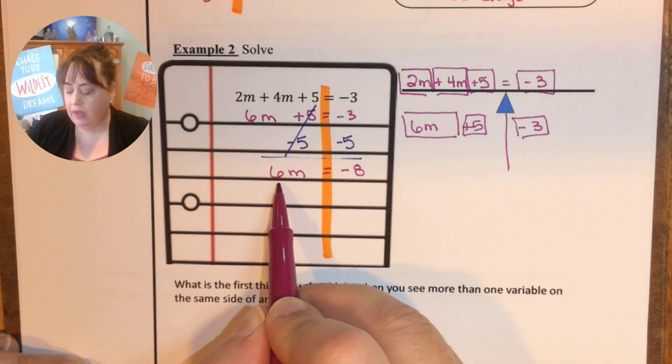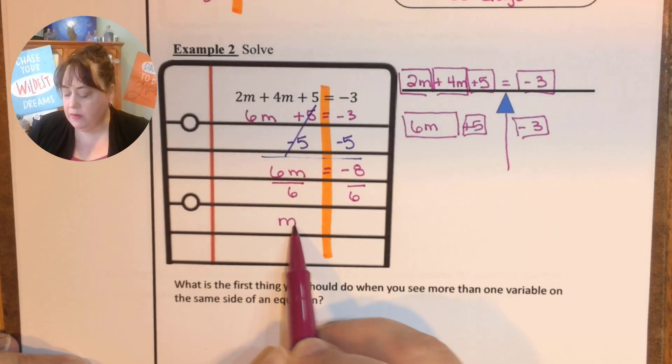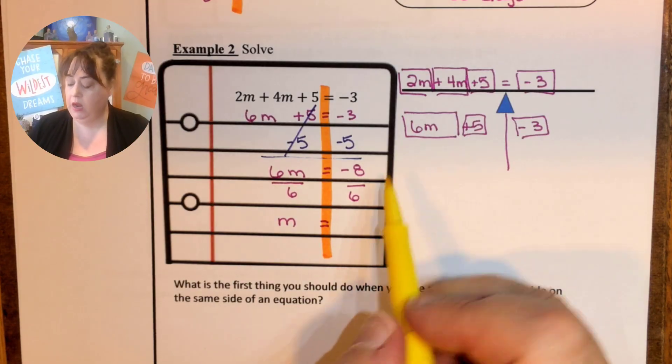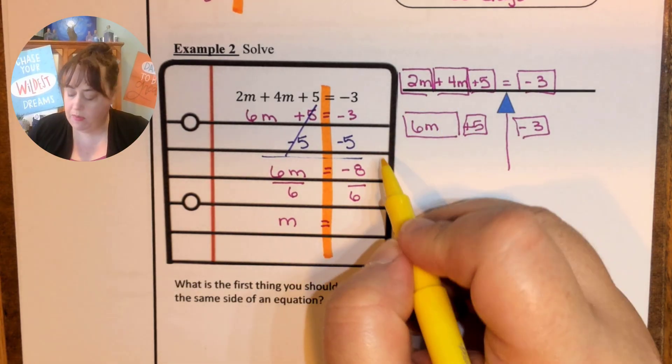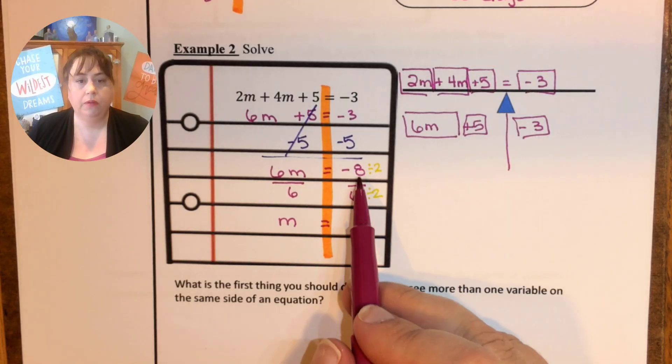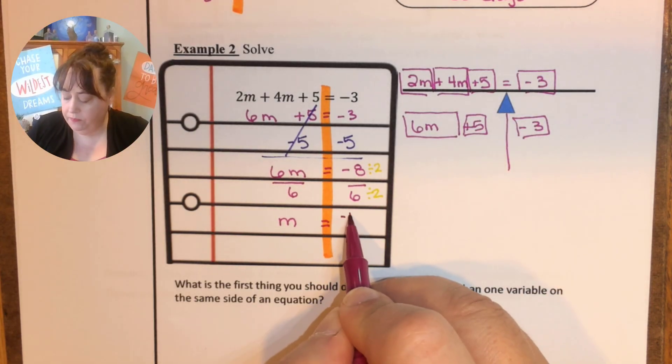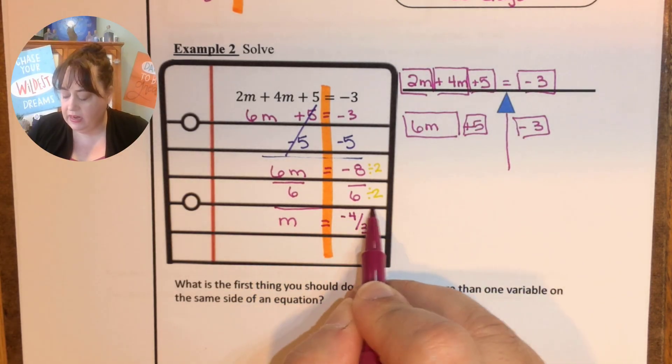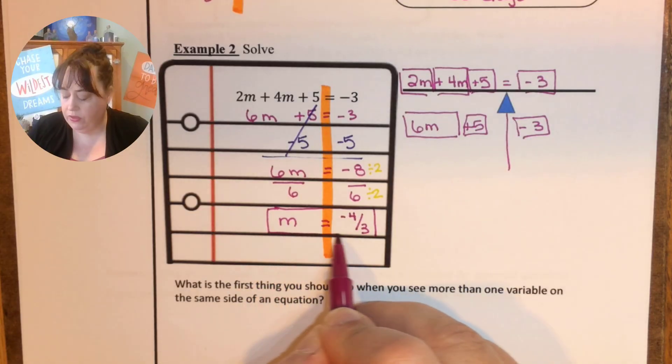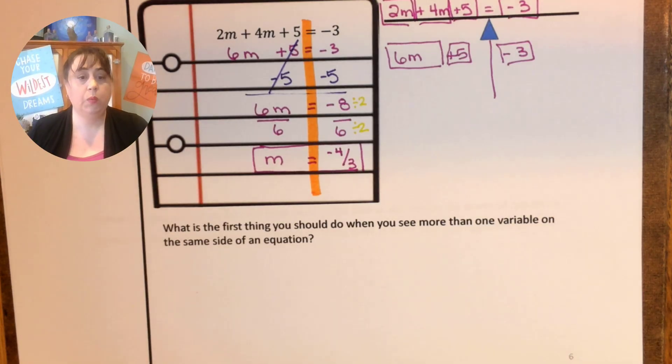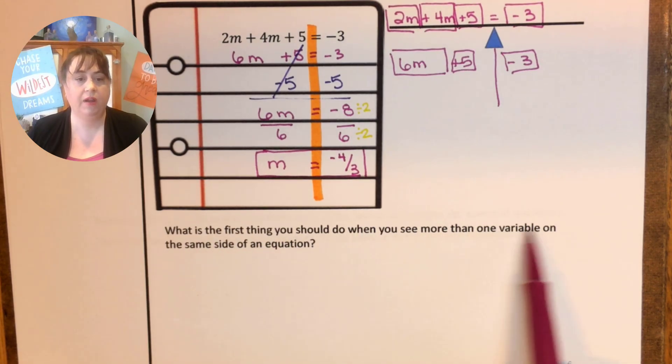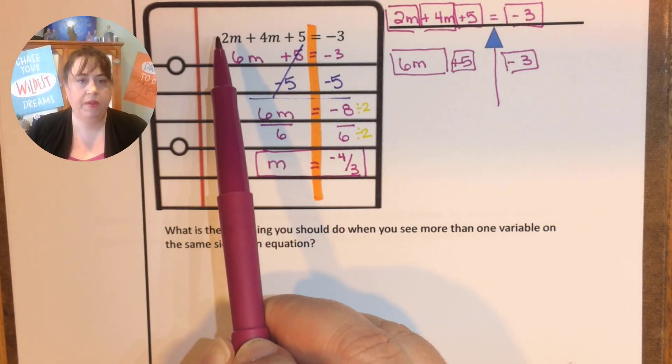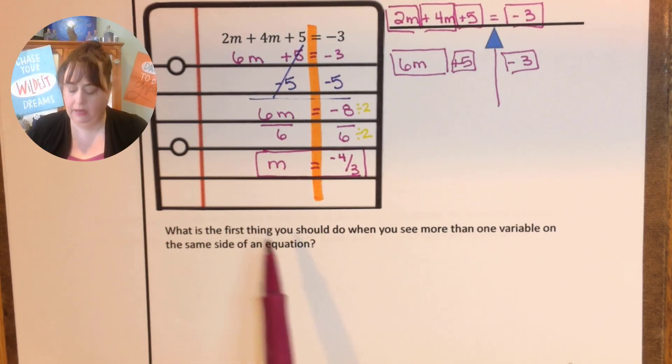So now I can just solve this like a one step equation. Six times m I undo multiplication with division. But I'm not done with this problem because now I need to simplify. I know that both eight and six are divisible by two. Negative eight divided by two is a negative four. And six divided by two is a three. So my answer is negative four thirds. So what is the first thing you should do when you see more than one variable on the same side of the equation? We combine like terms.